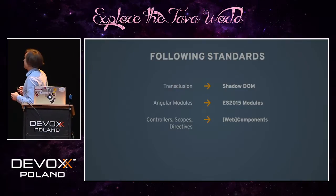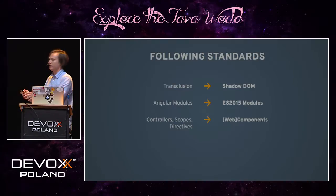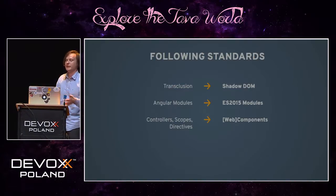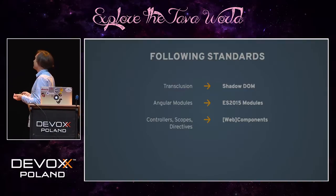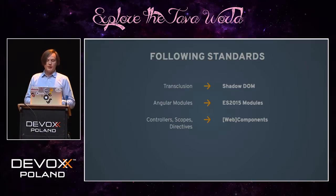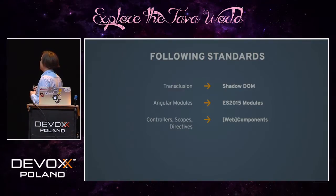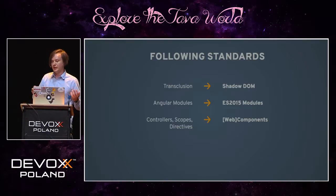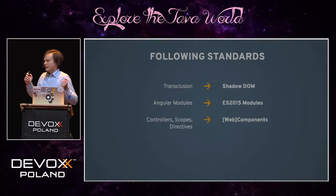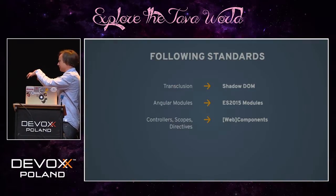Returning to our standards: Angular 2 just takes current standards and uses them instead of inventing its own ones. In Angular 1 we have transclusion, we have Shadow DOM, we have our own modules — why use those since we have such nice modules from ES6? All these things from Angular 1 could easily be mapped to the Web Components we have today. That's why it's a really nice idea to just take the standards, follow them, and build the framework on top of standards.